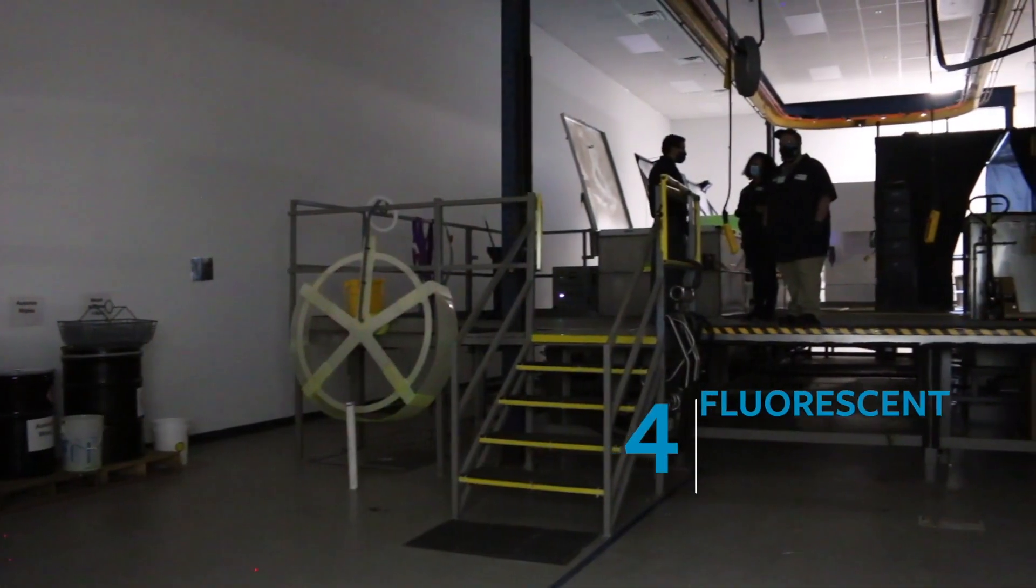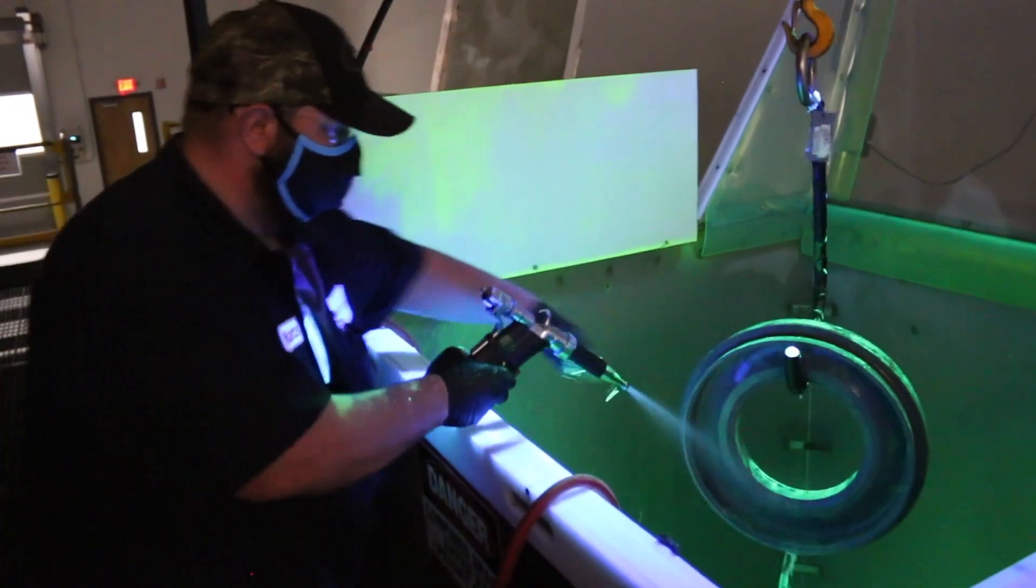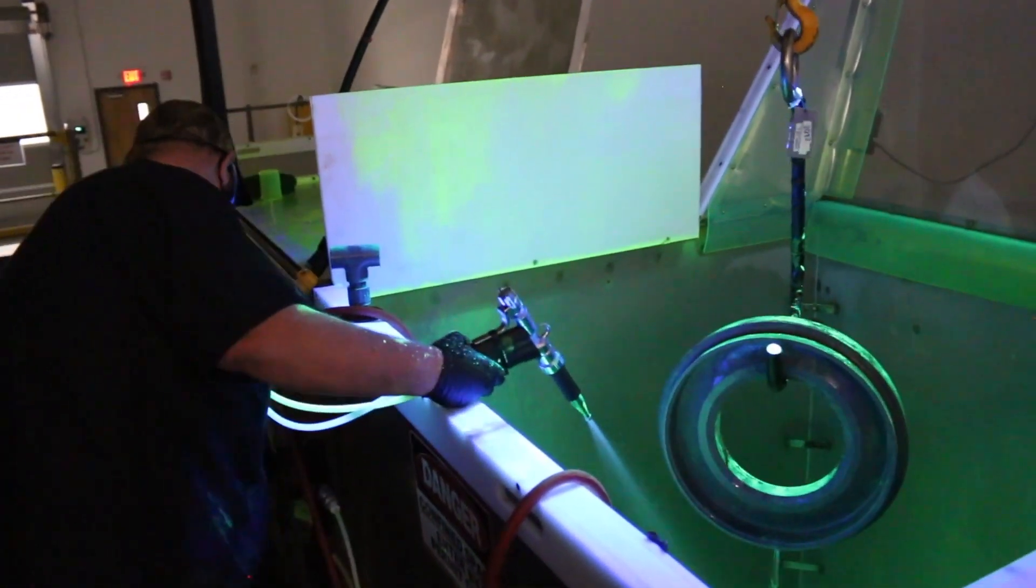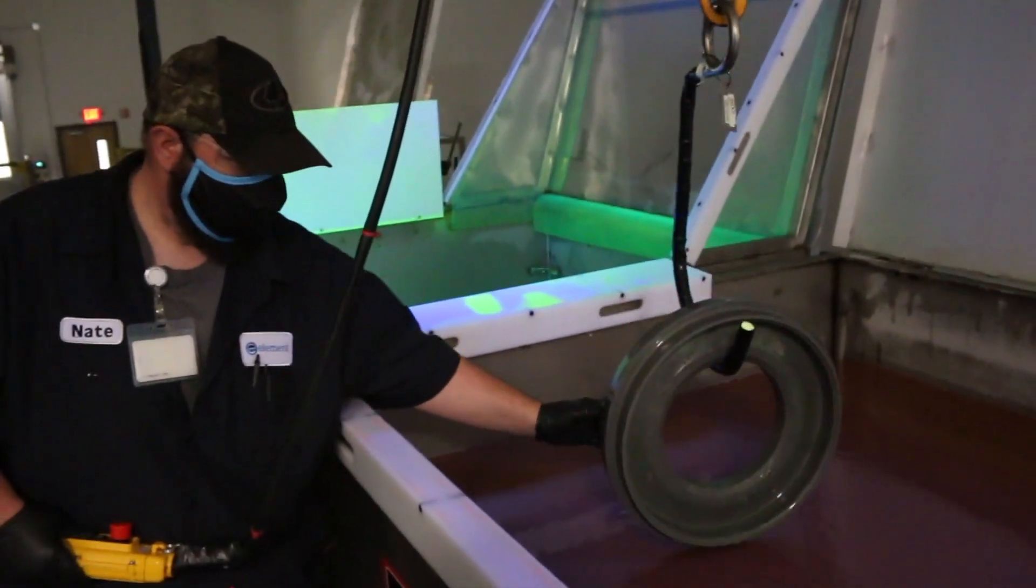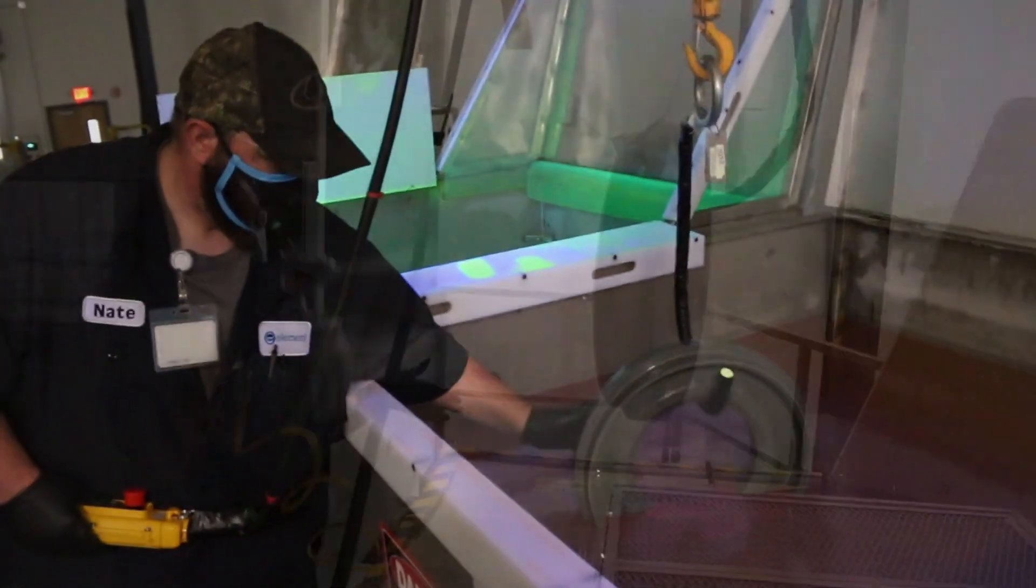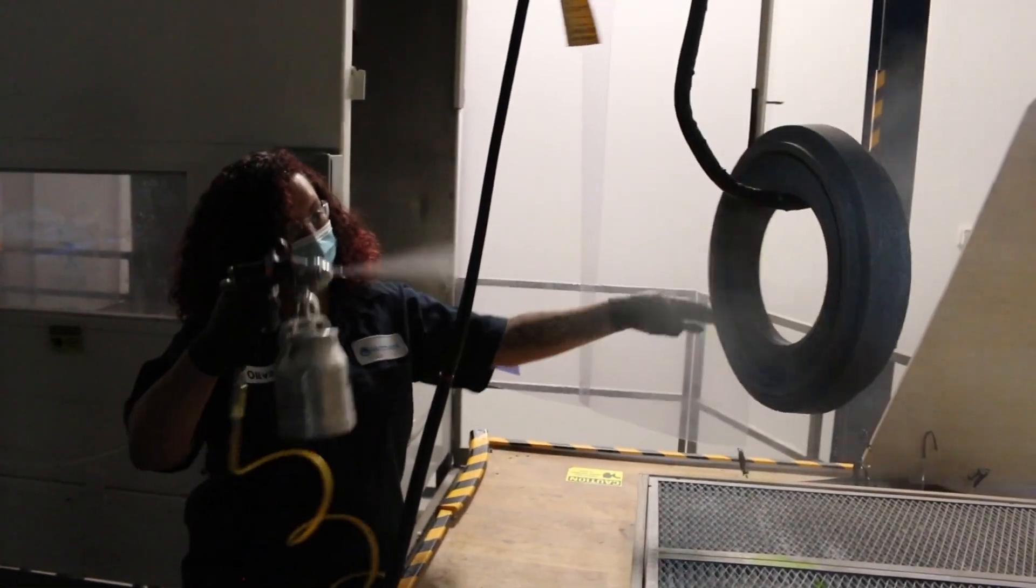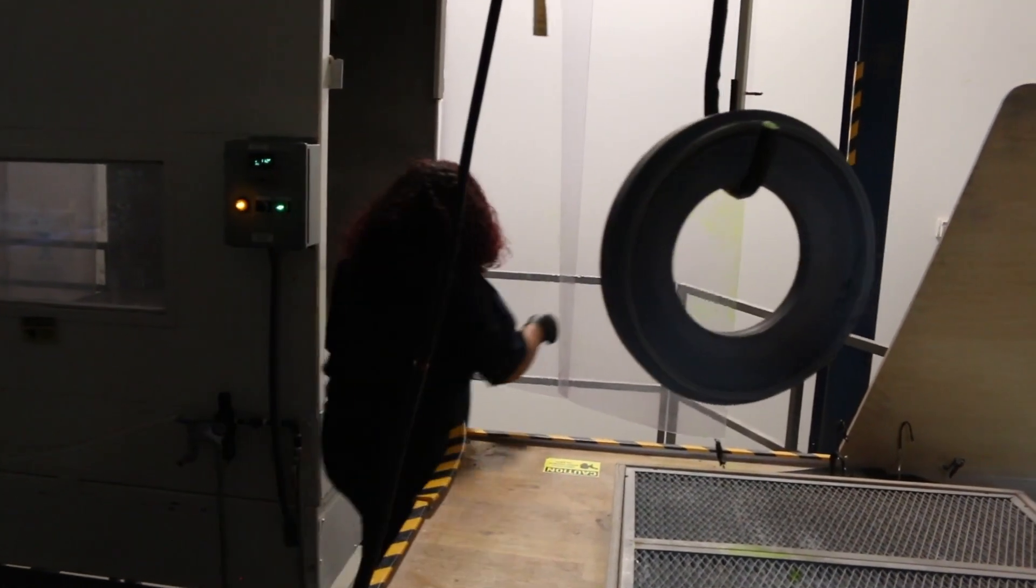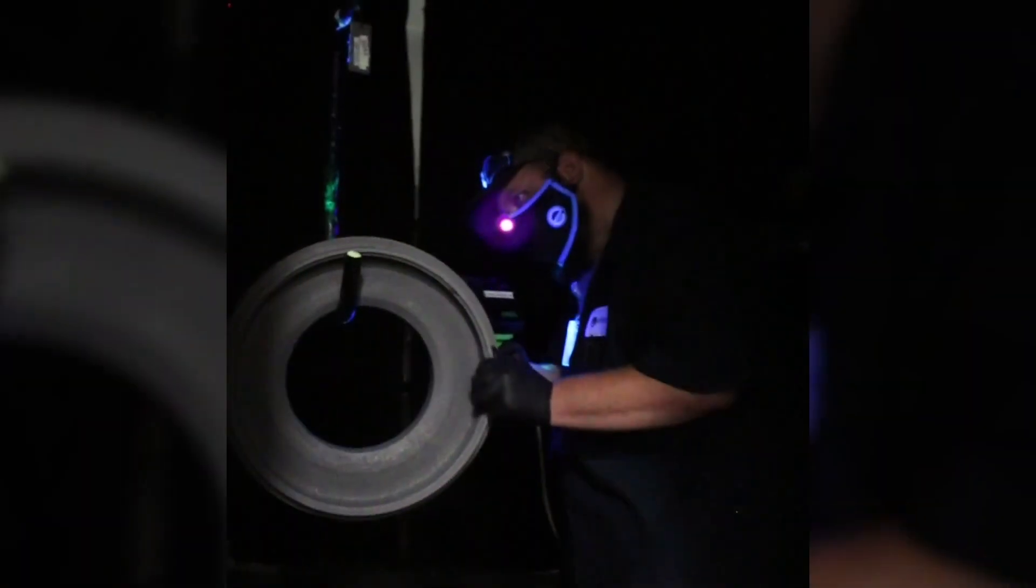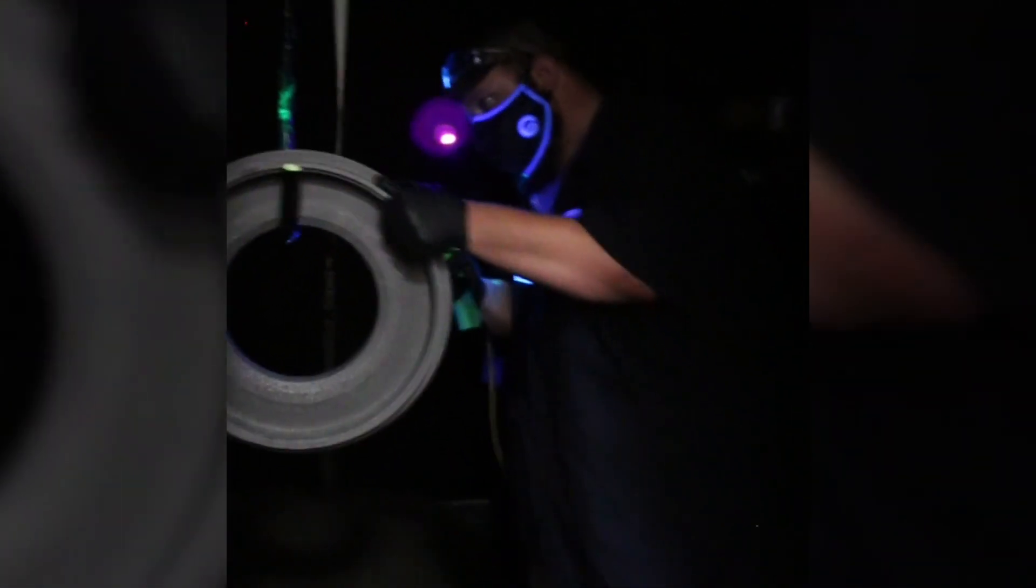Our fourth inspection technology is fluorescent penetrant inspection. Fluorescent penetrant inspection is one of the most utilized and reliable inspection methods used to detect surface discontinuities in non-porous materials. In general, FPI can be used at any point during the manufacture process and in service use. At Element Greenville, we offer Level 4 Ultra High Sensitivity Fluorescent Penetrant, which is the industry's most sensitive penetrant system.